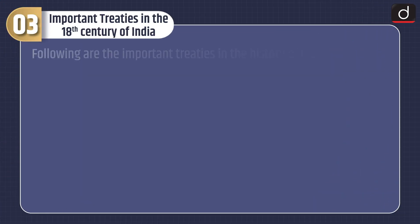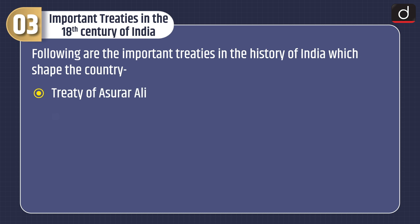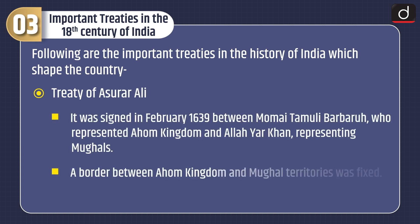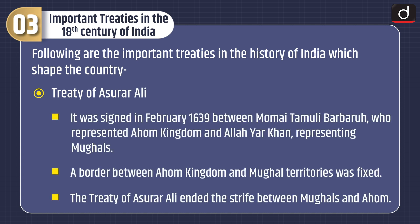Now let's discuss about important treaties in the 18th century of India. Following are the important treaties in the history of India which shaped the country. First is the Treaty of Asurar Ali. It was signed in February 1639 between Mumai Tamuli Babaruhu, who represented the Ahom kingdom, and Allah Yaar Khan, representing the Mughals. A border between the Ahom kingdom and Mughal territories was fixed, and the Treaty of Asurar Ali ended the strife between the Mughals and Ahom.